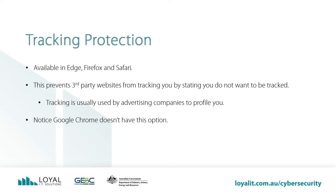Tracking prevention helps with privacy, available in Edge, Firefox, and Safari. This prevents third-party websites from tracking you by stating that you do not want to be tracked. Tracking is usually used by advertising companies to profile you. Notice Google Chrome doesn't have this option, as their business model relies on tracking and profiling you to serve you relevant ads.